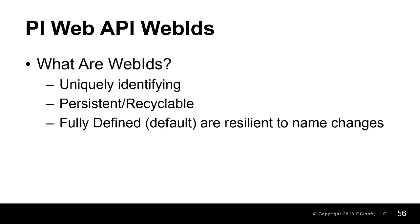Web IDs are unique identifiers that are hashes of both the path and one or more GUIDs for the object being queried. The reason we use both GUIDs and paths is to make the web IDs resilient to changes in the name or the GUID, so your client application can cache these persistent fully defined web IDs rather than having to make multiple round trips to find any of them out when querying, if you know you'll be querying the same object multiple times.